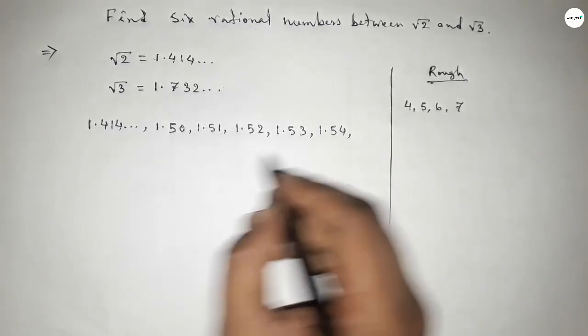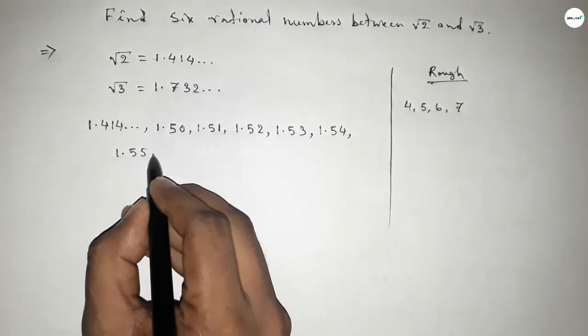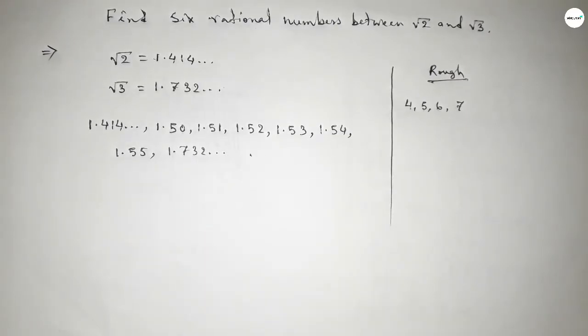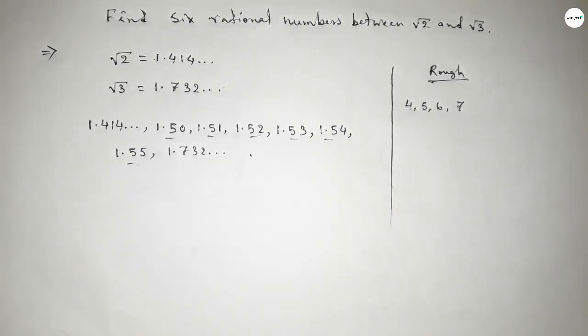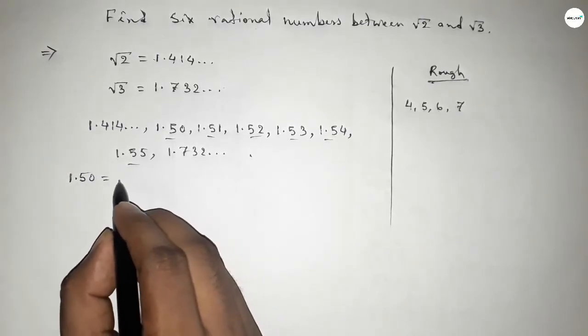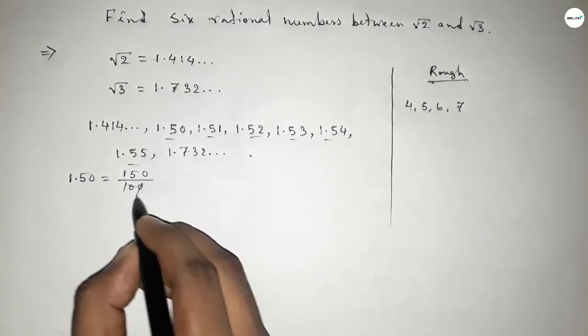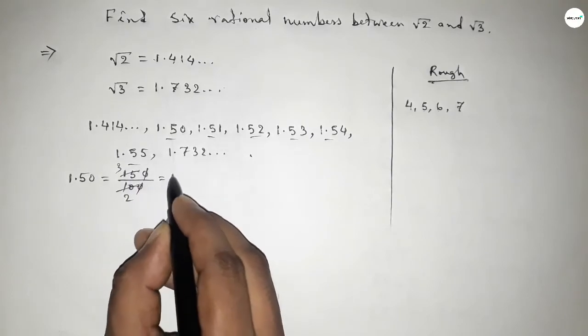And these are the required six rational numbers. Now simplifying. This is one point five zero equal to we can write 150 over 100. Now simplifying, if you divide both numbers by five, this is 3 over 2, a rational number. Next, one point five one equals 151 over 100.